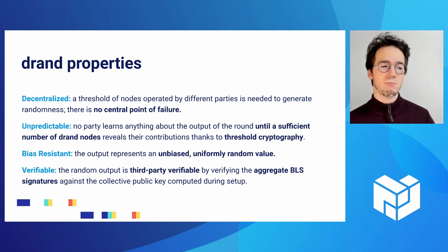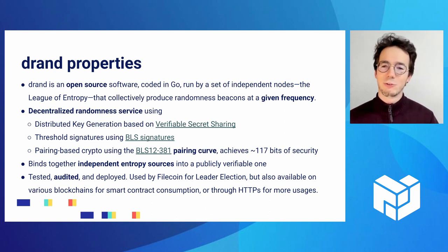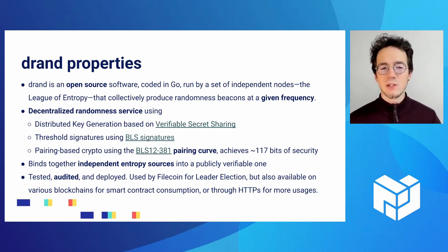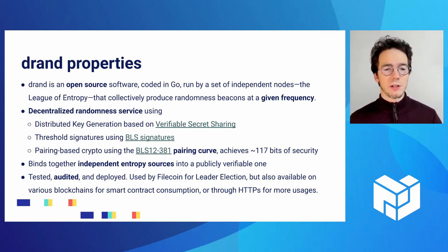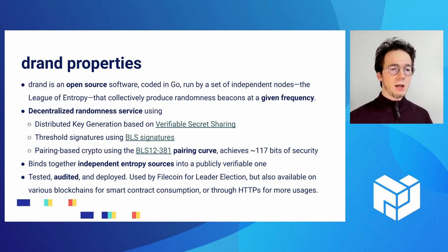If that signature verifies, you can be sure the beacon is valid and has been properly generated by the League of Entropy, with a threshold of nodes collaborating to produce it. DRUN is open source, written in Go, and uses fancy cryptography under the hood, such as verifiable secret sharing and distributed key generation. Importantly, it's based on BLS signatures — specifically Boneh-Lynn-Shacham signatures — instantiated on the BLS12-381 elliptic curve, which is a pairing-friendly curve.